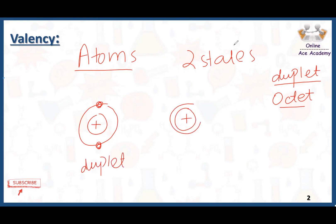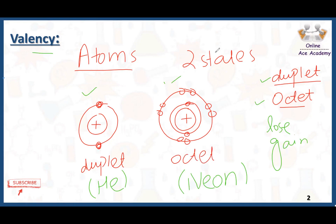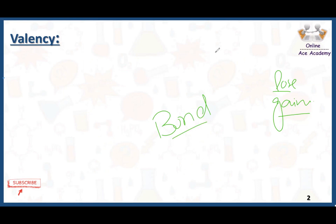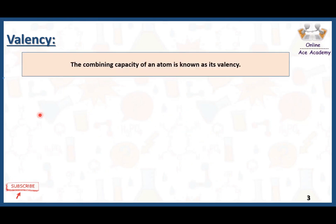If there are two or more than two shells in an atom and in the valence shell there are eight electrons, that state is called the octet state. Every element in the periodic table doesn't have two or eight electrons in their outermost shell, so they need to lose or gain some electrons. By losing and gaining electrons, a bond is formed.